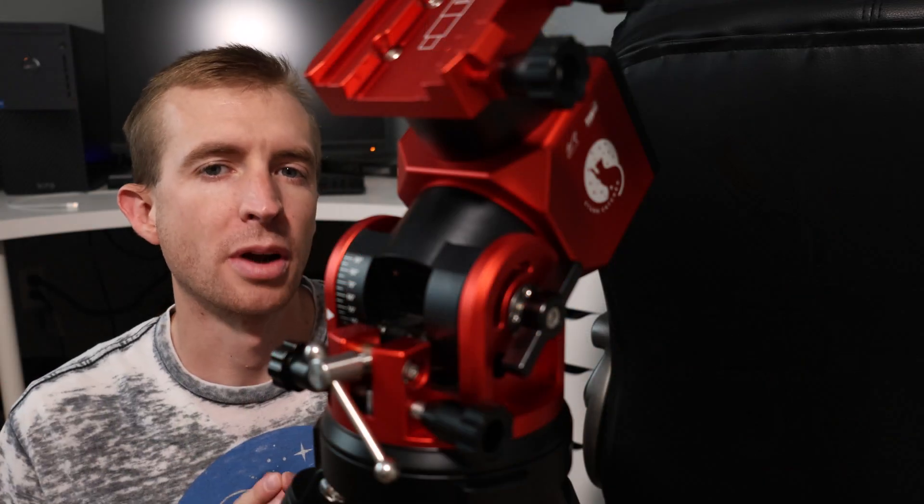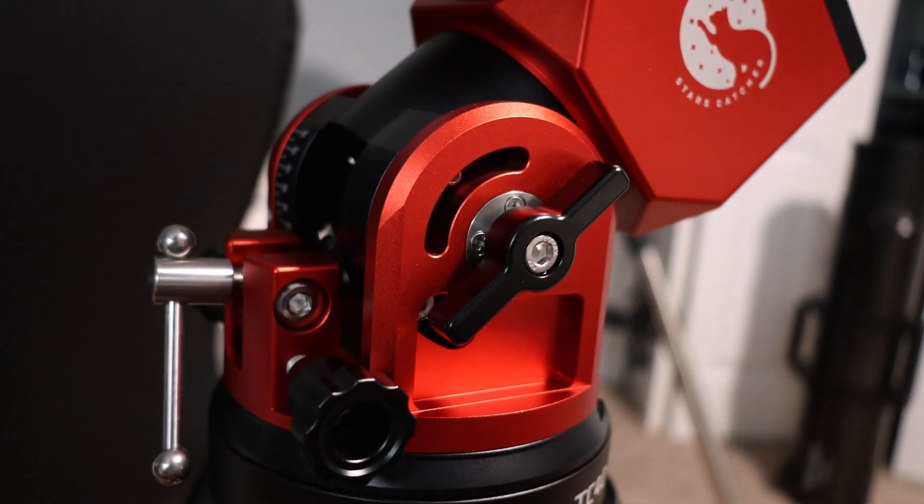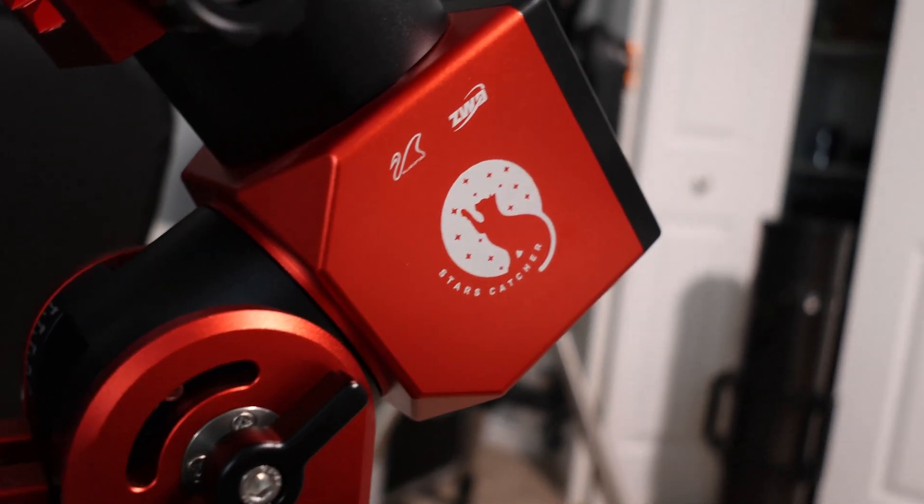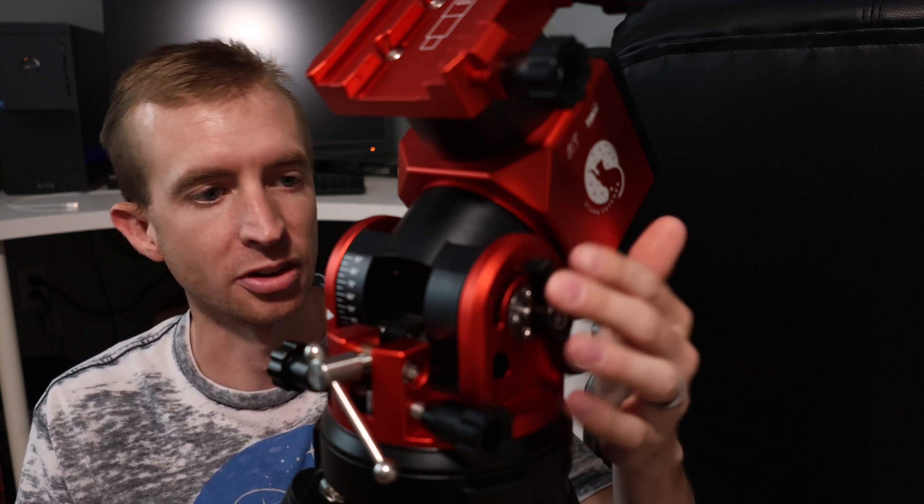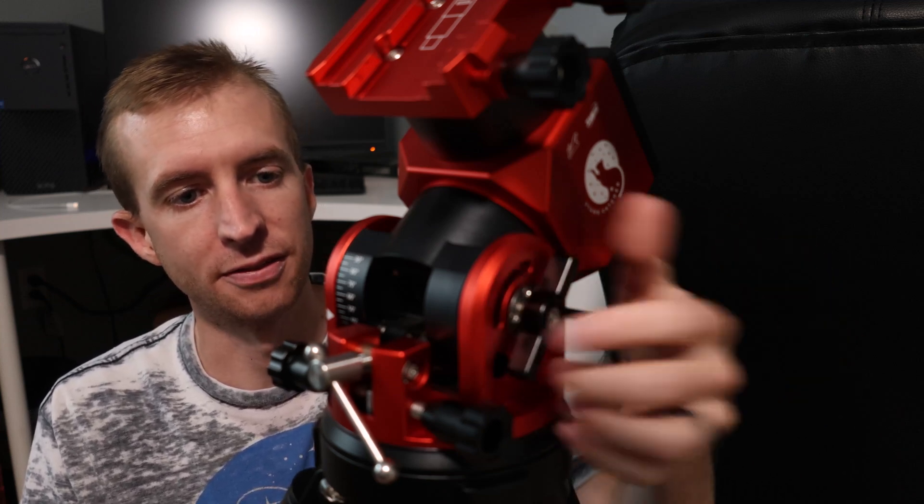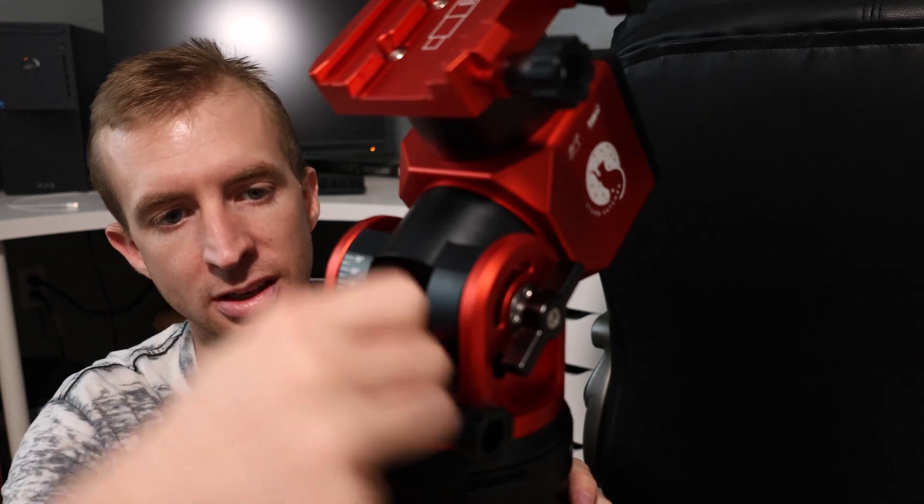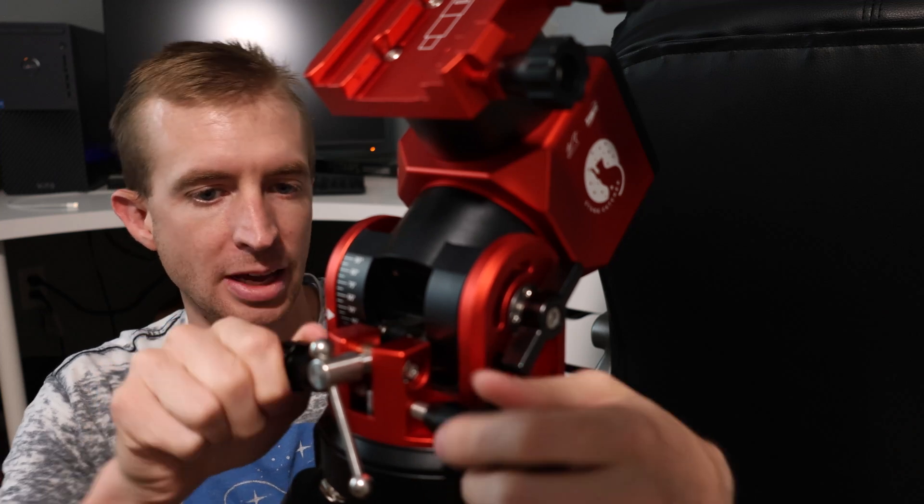Part of evaluating a product includes taking a look at the overall manufacturing, the fit and finish. And the machining on the AM3 is awesome, just like on the AM5. Look how smooth these elevation locking knobs just glide. Excellent fit and finish there. The elevation adjustment knob, again, just very, very smooth. Same with the azimuth knobs.